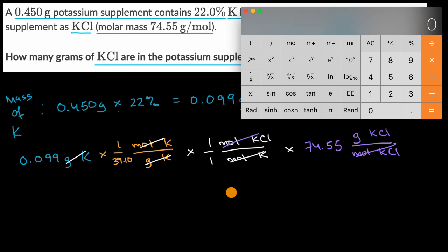So let's get the calculator out again. So I have 0.099 divided by 39.10, divided by 39.10, times one, times 74.55, times 74.55 is going to be equal to that.